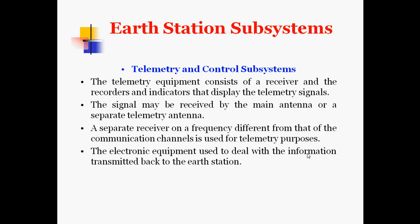The telemetry and control subsystem consists of a receiver, recorder, and indicator that displays telemetry signals. The signal may be received by the main antenna or a separate telemetry antenna on a frequency different from that of the communication channel. The electronic equipment deals with information transmitted back to the earth station, and telemetry is used for control of the antenna positions and for the acquisition of satellites.